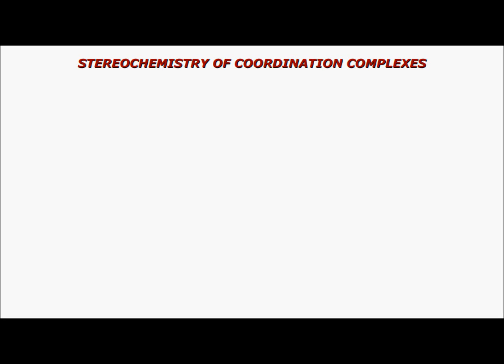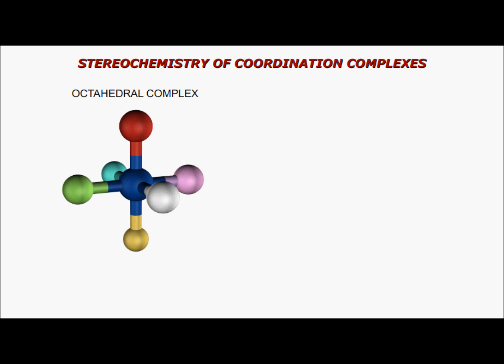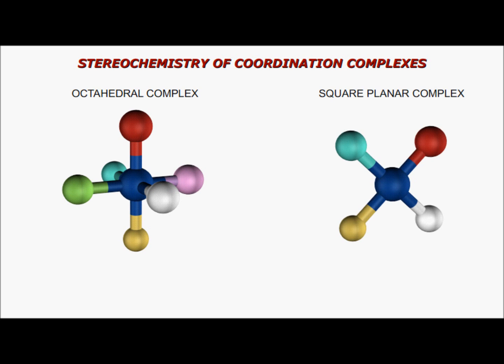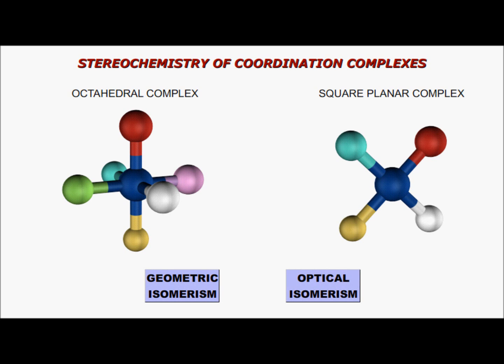In this video, I shall discuss the stereochemistry of coordination compounds having octahedral and square planar shapes. There are two types of stereoisomerism: geometric isomerism and optical isomerism.